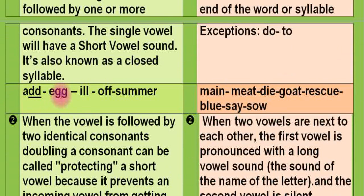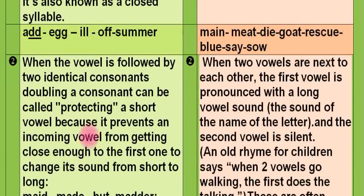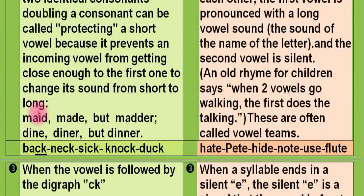When the vowel is followed by two identical consonants, or double consonants, doubling a consonant can be called 'protecting a short vowel' because it prevents an incoming vowel from getting close enough to change the sound from short to long. For example: 'mad' vs 'made'.